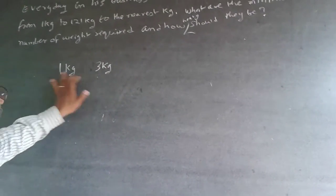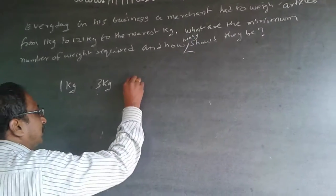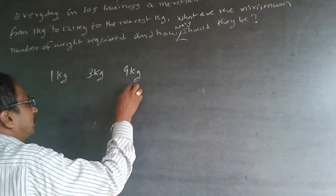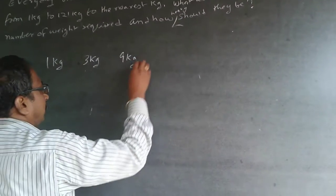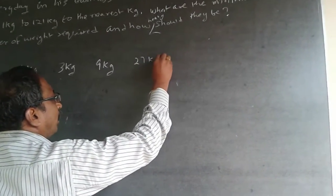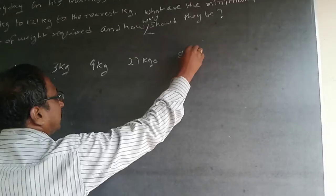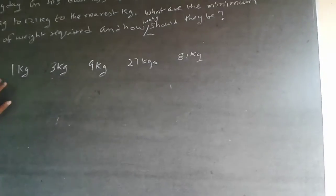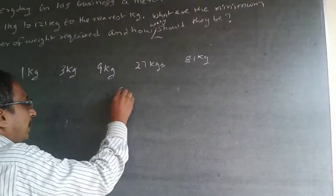Then five kg. So 1 + 3 + 5 will be nine kg. Same process. Then it will be 27, then it will be 27 kg, and the last one will be 81 kg. It is nothing but power of three: 1, 3, 9, 27, 81.